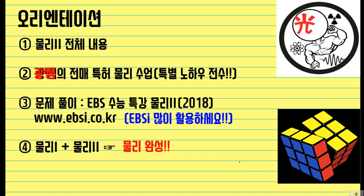우선 첫 번째로 물리2 전체 내용 다룰 거고요. 두 번째로 광쌤의 전매특허 물리 수업이라고 해서, 사실 이 수업을 찾는 친구들은 선생님하고 수업이 맞는 친구들이잖아요. 선생님 방법이 좀 단순하죠. 그런 내용들 위주로 수업할 거고요. 별거 아닌 거를 괜히 어렵게 설명하니까 여러분들이 어려워하는 거죠. 별거 아닌 걸 별거 아닌 대로 그냥 설명하면 별거 아니거든요, 진짜.